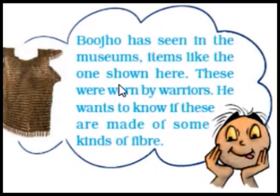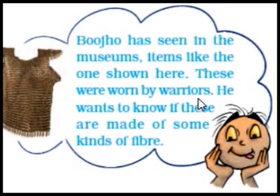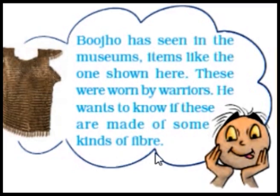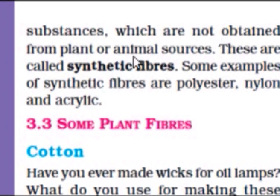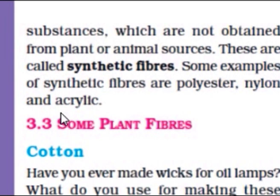Substances which are not obtained from plant or animal sources are called synthetic fibers. Bujo has seen in the museum items like warrior dress, which are worn by warriors to protect a person on the battlefield. Some examples of synthetic fibers are polyester, nylon, and acrylic.